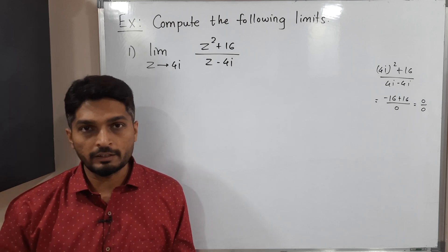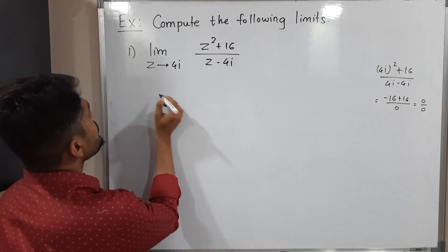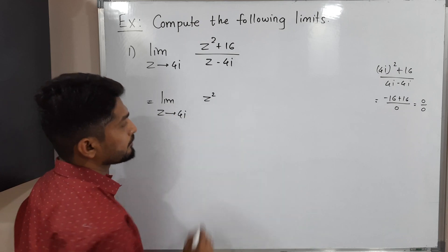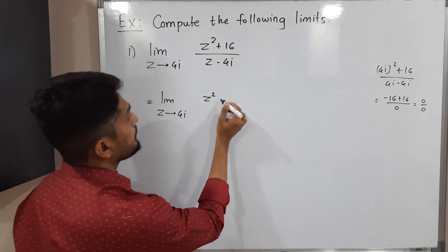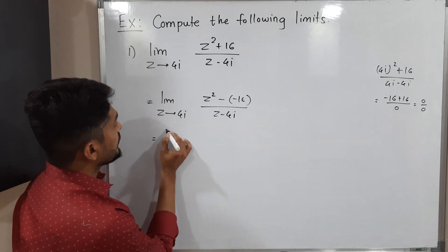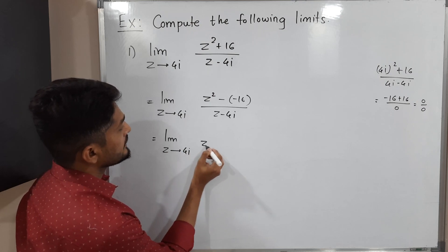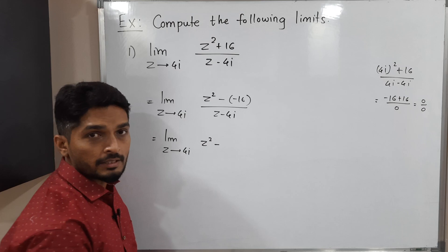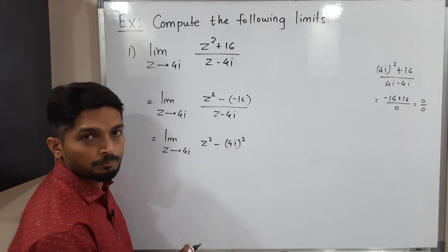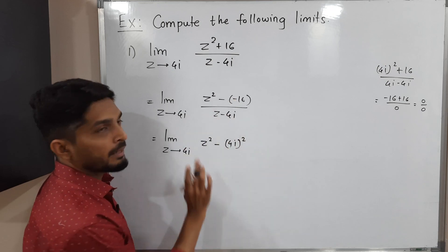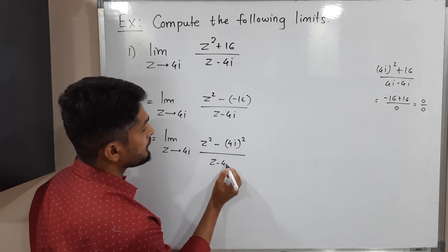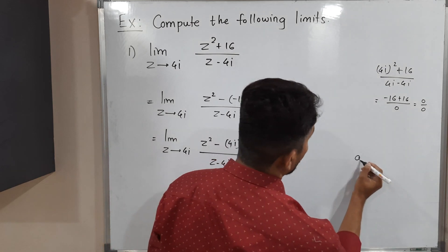So the limit as z tends to 4i of (z² + 16) / (z − 4i). I'm going to adjust the sign: this is (z² − (−16)) / (z − 4i). Now, 16 is 4² and −1 is i², so −16 = (4i)². Therefore we can write this as the limit of (z² − (4i)²) / (z − 4i).